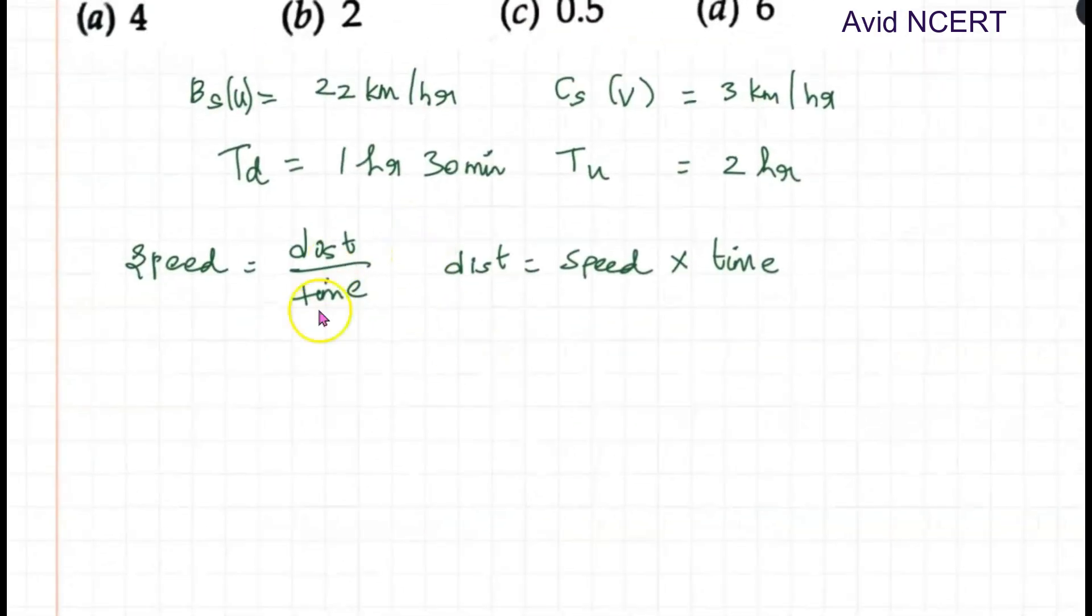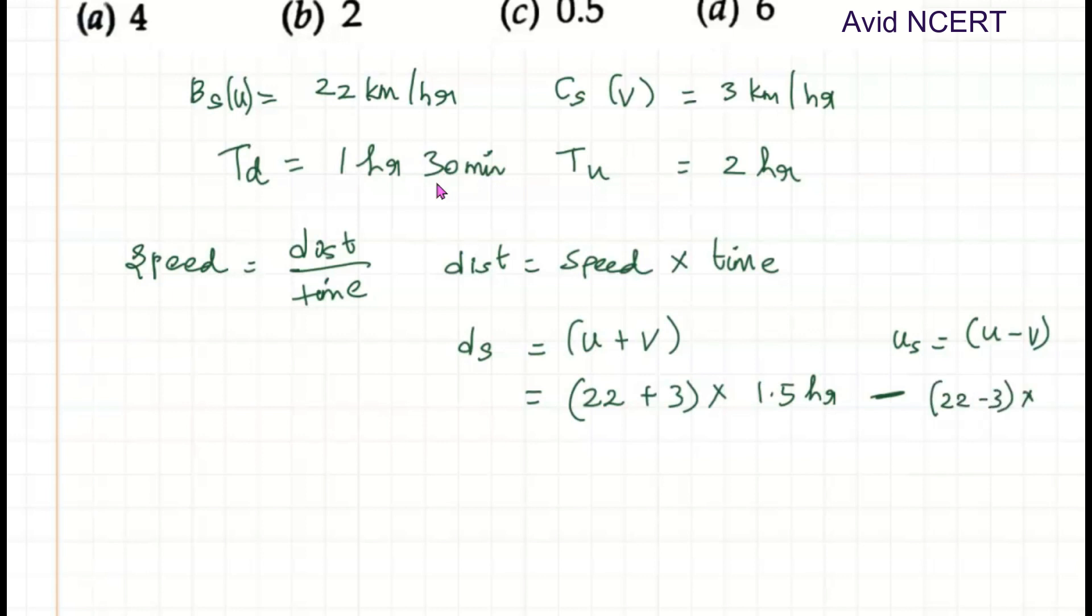So downstream speed is U plus V. The speed is U plus V. So U is 22 plus V is 3 times time taken, 1 hour 30 minutes, which converting into hours will be 1.5 hours, minus upstream. For upstream it is U minus V. So U is 22 minus V is 3 times time taken is 2 hours.